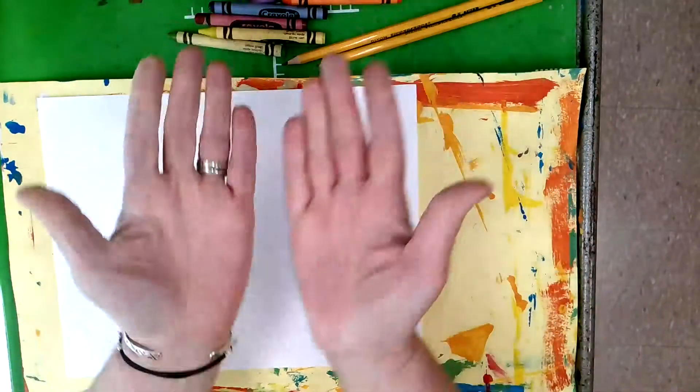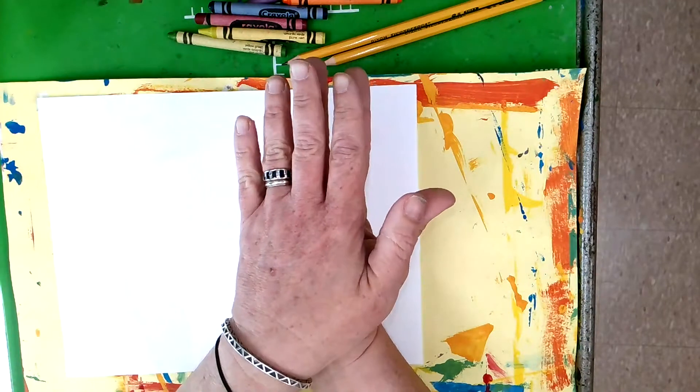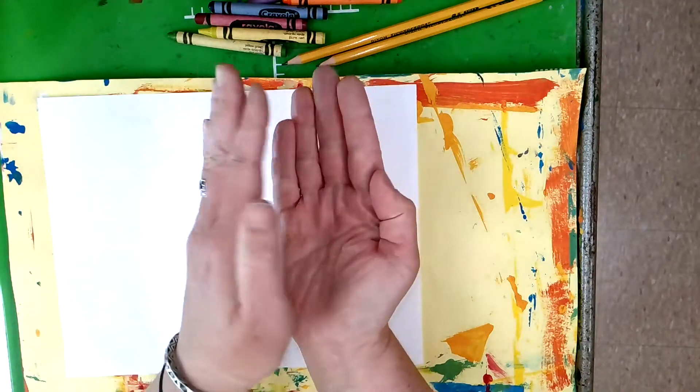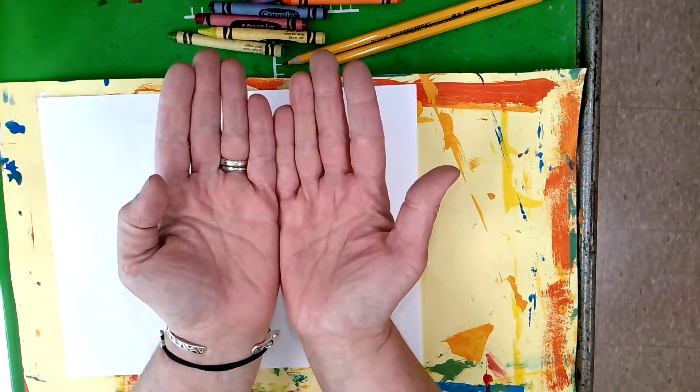Today I'm going to show you how to make a symmetrical butterfly. When you think about something that is symmetrical, you think about something that is exactly the same on both sides. A square is symmetrical. You can fold it in half and it is exactly the same on both sides.